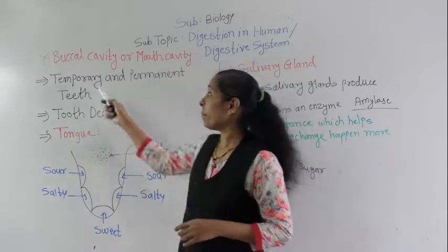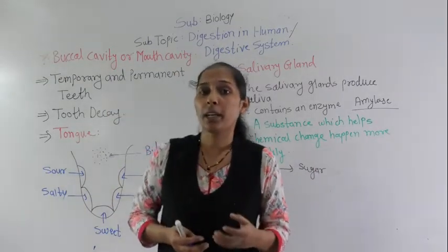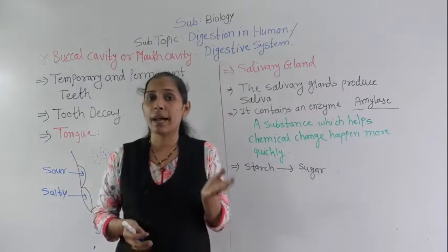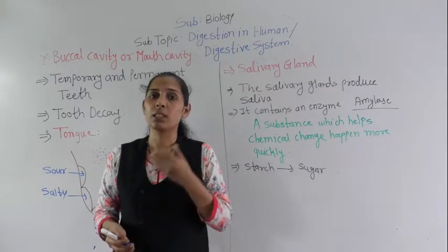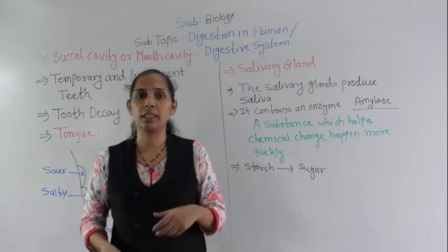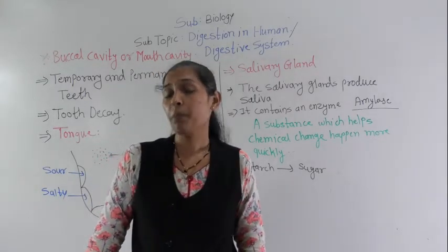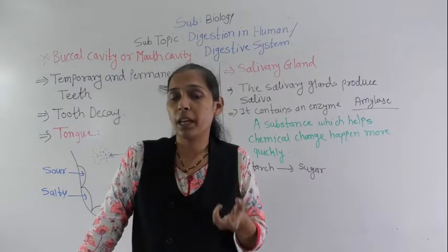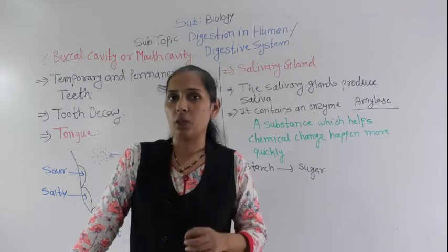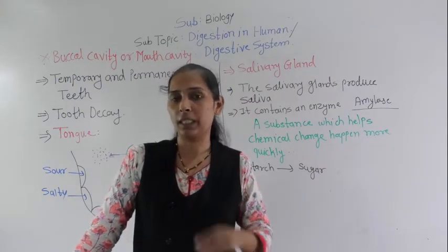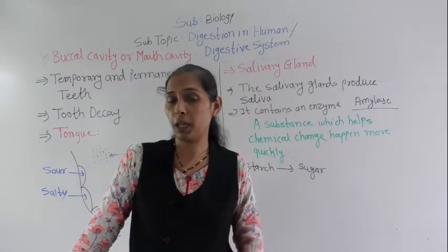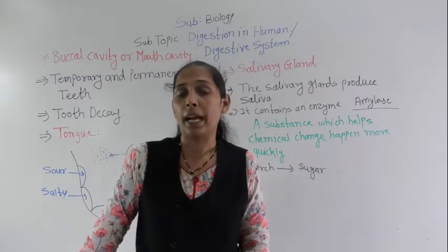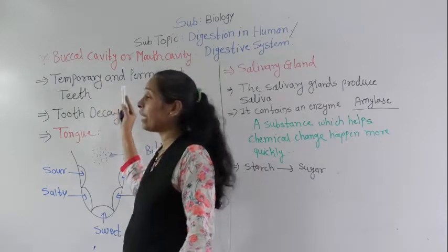Temporary teeth: as we know, whenever a child is born, that child doesn't have any teeth. As the months pass, slowly, at around 6 to 8 months, the child starts having teeth. When the child reaches the age of 6 to 8 years, those milk teeth, or the first set of teeth, start to fall out one by one. Those teeth are called temporary teeth.